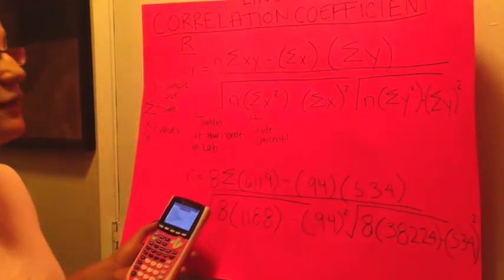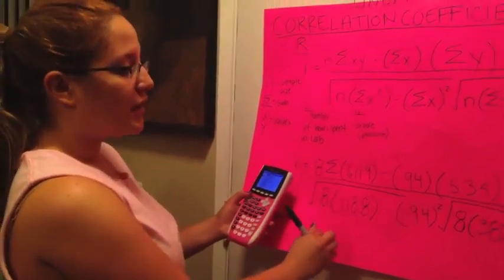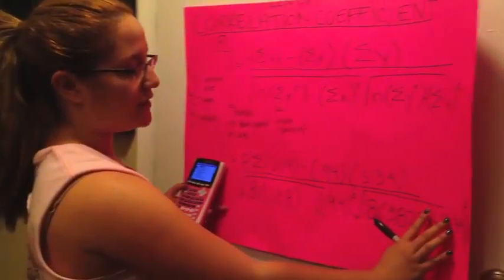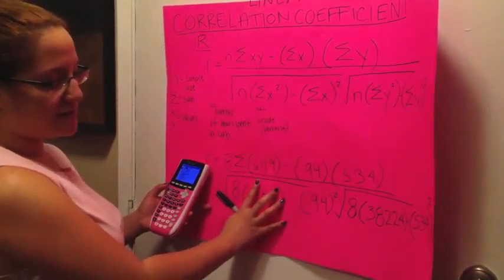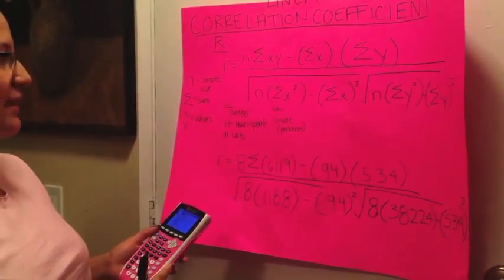So you're just going to plug in exactly how the formula tells you. So for your n, your 8, your xy, 6,119, and so on. And then you have to calculate it on your calculator. Make sure you can try to do this section first, or the sections inside the square root, and then the top, and then you put it all together, just so you don't make any mistakes.